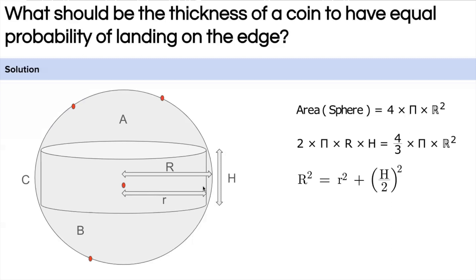Now here we will get the relation between the R and H itself. The final thing will come out to be the height should be 0.35 or 35 percent of the diameter of the coin, and it will have the equal probability of head, tail, and falling on its edge.